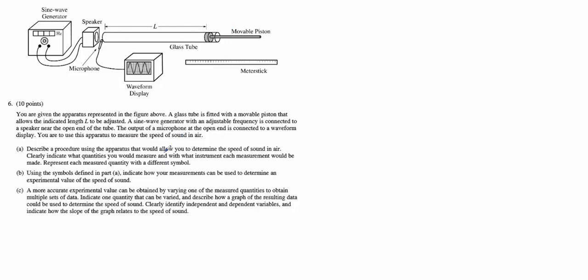And so part A wants us to describe a procedure using the apparatus that will allow us to determine the speed of the sound in the air. We've got to indicate all kinds of things like what we're going to measure and what instrument we're going to be using. And then for B, we want to use the symbols defined in part A, i.e. the variables, to indicate how your measurement will be used to determine the actual speed of the sound.